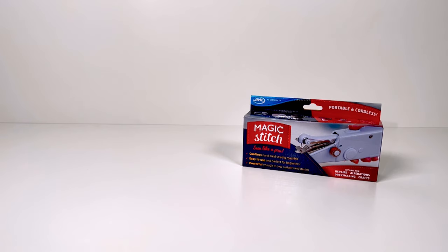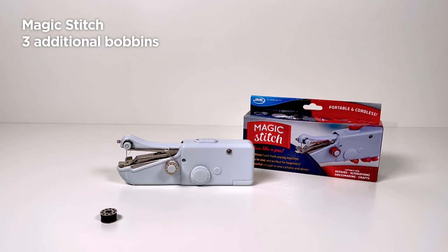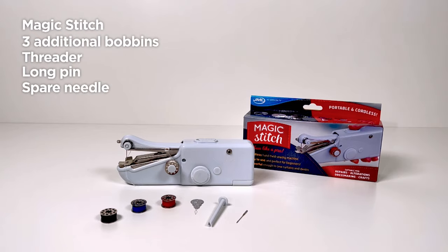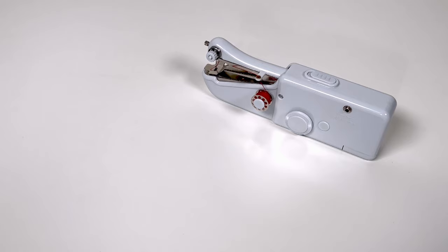Inside you will find the magic stitch, already threaded and ready to go. Three additional bobbins of coloured thread, the threader, the longer pin for those larger spools of thread, a spare needle and finally a piece of fabric for testing.